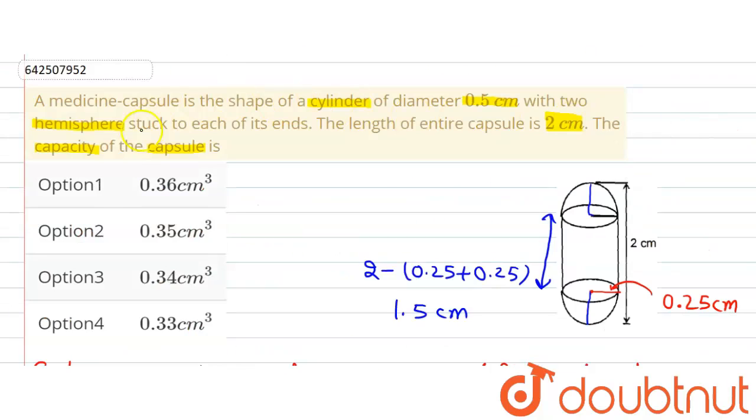Now let's move to the options. Option 1 says 0.36 centimeter cube. That means option 1 is the correct answer. Option 2 says 0.35 centimeter cube, this is not correct. Option 3 says 0.34 centimeter cube, this is also not correct. Option 4 says 0.33 centimeter cube, this is also not correct. So the correct option is option 1.